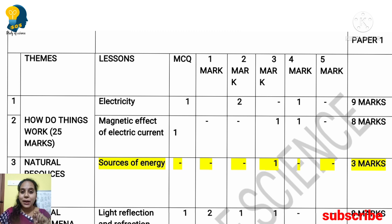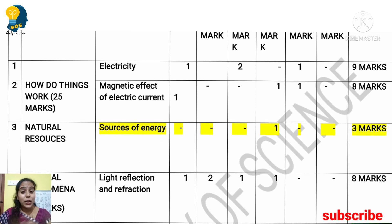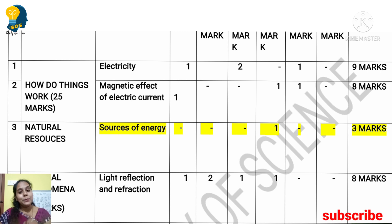Electricity lesson carries 9 marks. Magnetic Effect of Electric Current is 8 marks. And Light, Reflection and Refraction is 8 marks. All these 3 lessons come under 'How Do Things Work.' The leftover 3 marks from physics come from the 'Natural Resources' theme.